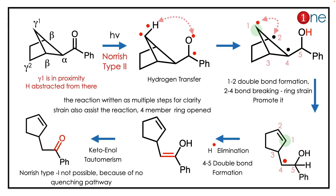By looking at the light, you might guess it's a photochemical reaction. It's a Norrish Type 2 reaction that occurs. Norrish Type 1 is not possible because there is no meaningful quenching pathway, so Norrish Type 2 occurs.